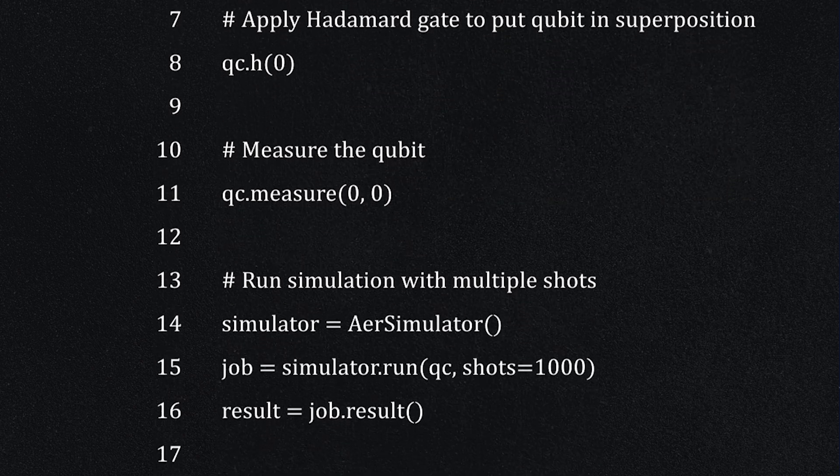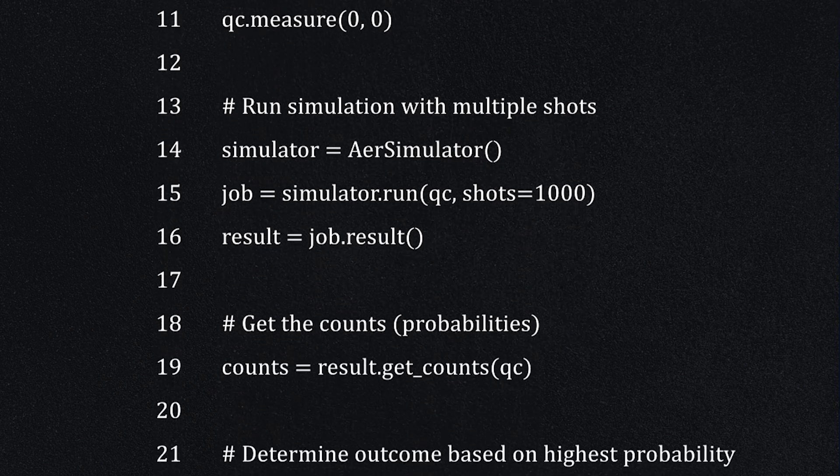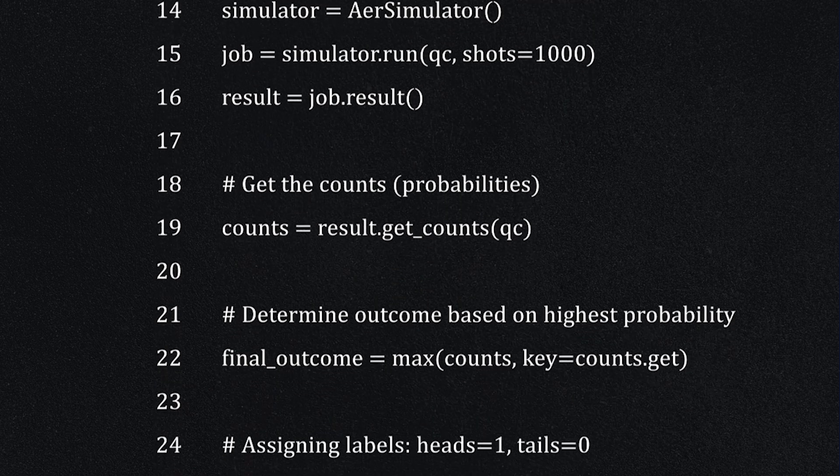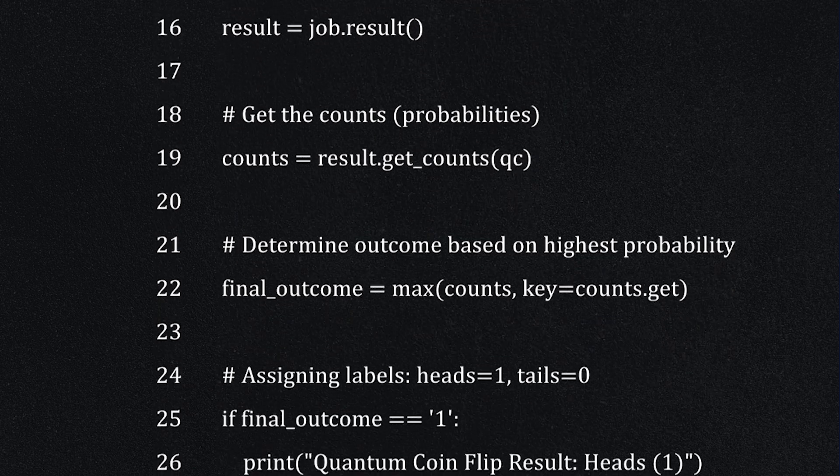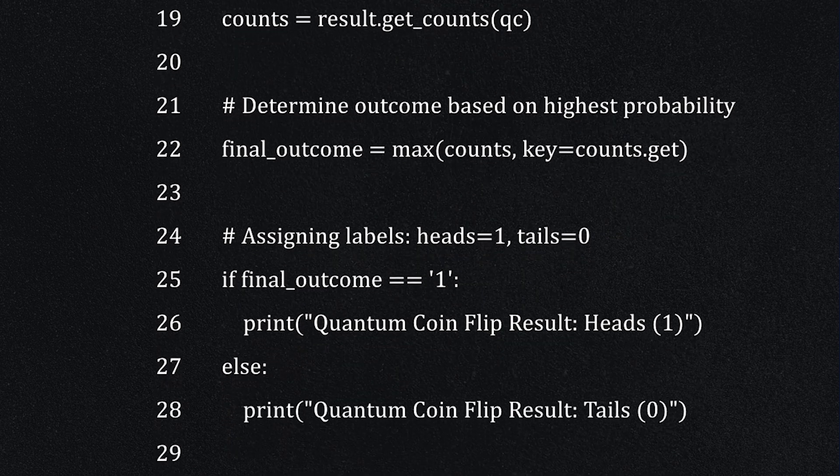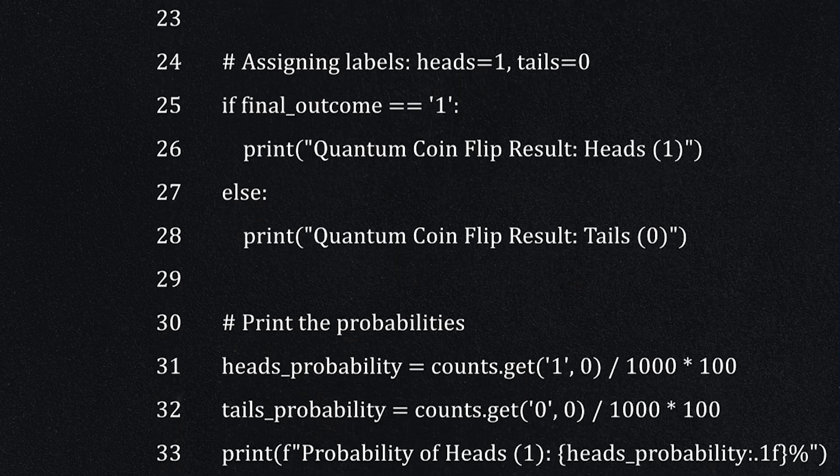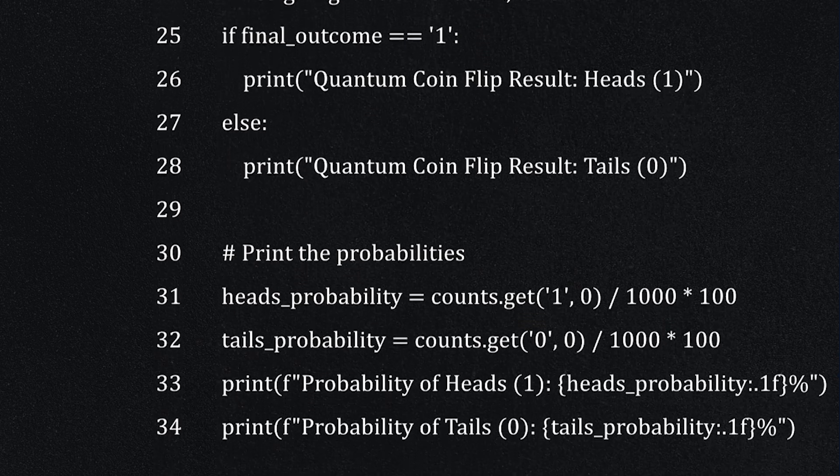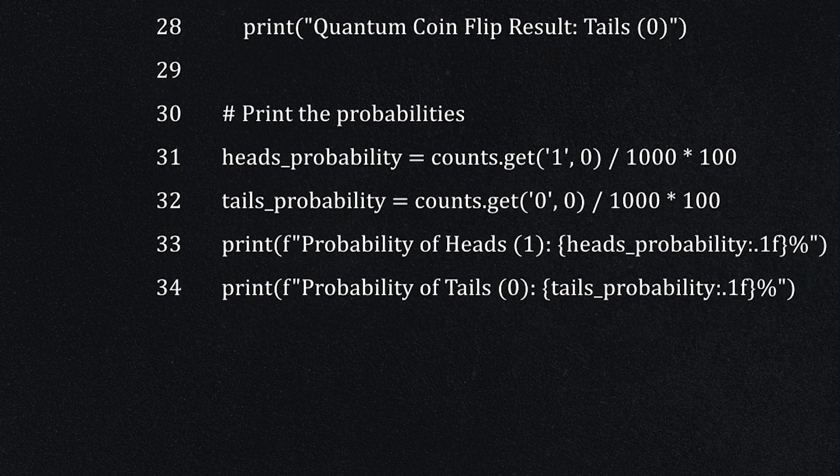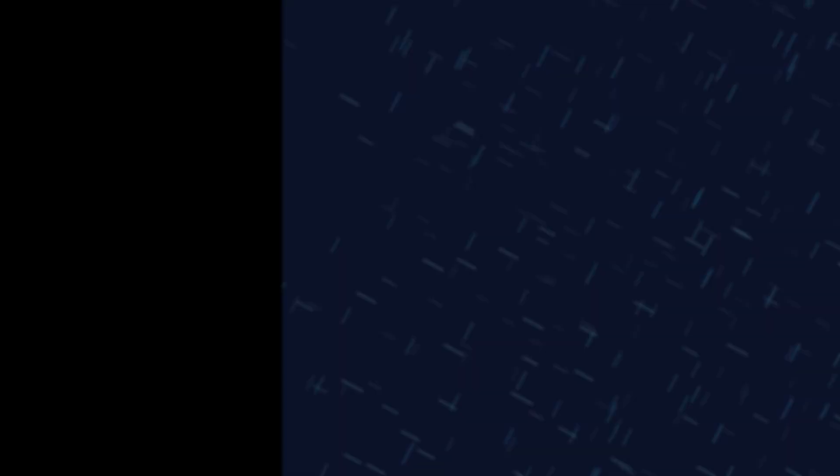You'll see results along these lines: Quantum coin flip result: Tails (0) or Heads (1), probability of heads (1): X percent, probability of tails (0): Y percent. Because quantum measurements are inherently random, the exact numbers vary each time you run the script. Sometimes heads will be more common, sometimes tails, but overall they should hover around a 50/50 split. This demonstrates the probabilistic nature of quantum computing and gives us a fun, hands-on glimpse of how qubits behave.